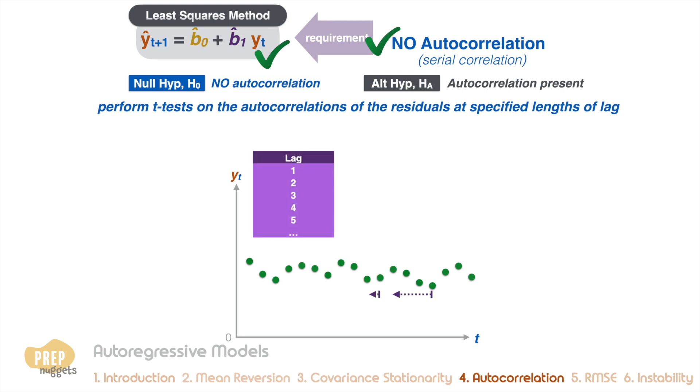For each specified lag interval, we estimate the autocorrelation, which is the level of correlation between the forecast errors from one period to the next. You should be given these figures in the exam.